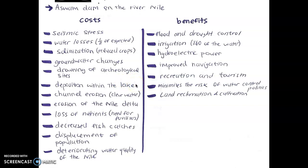Deposition within the lake and channel erosion are also significant due to the amount of water held back. This water weighs on everything and causes extra erosion — erosion caused by water in this way is called clear water erosion. In the Aswan Dam, it lowered the channel by 25 millimeters over a period of 18 years.